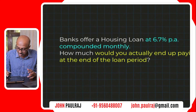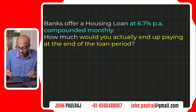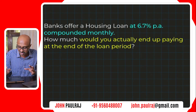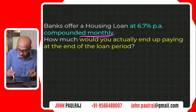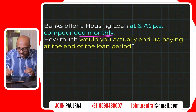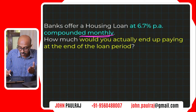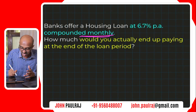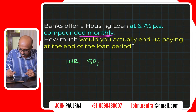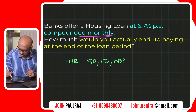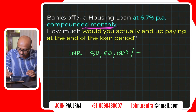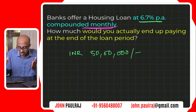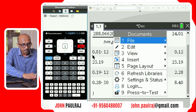Let's take one more example on loans to understand the finance solver. Banks in India usually offer a housing loan at 6.7% per annum, compounded monthly. Let's say you want to take a housing loan — you're in your 20s and you need INR 50 lakhs. 6.7% doesn't sound like much, but let's see what the calculator has to say. I'm going to add a new problem and use the finance solver.